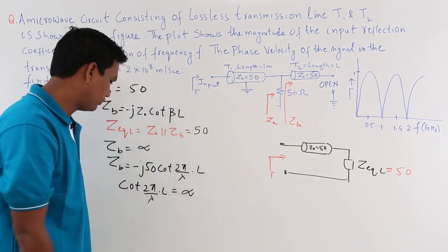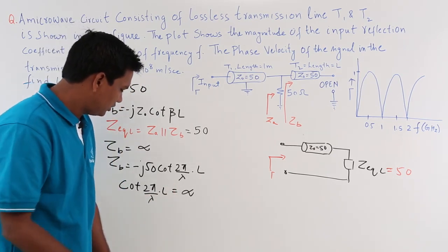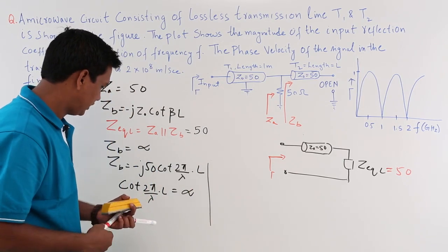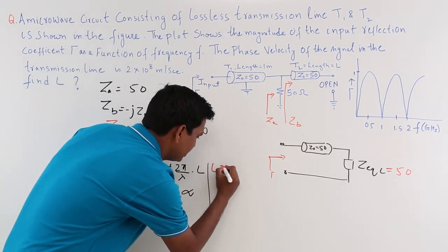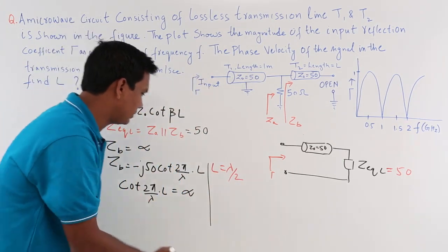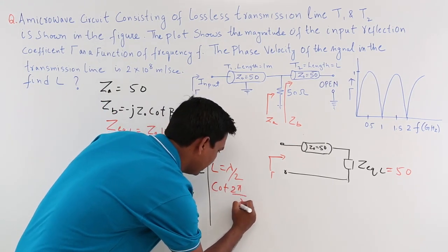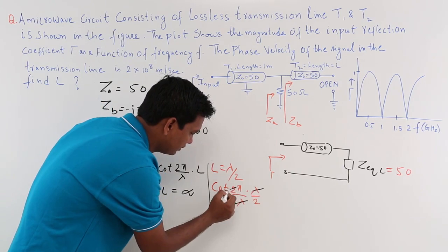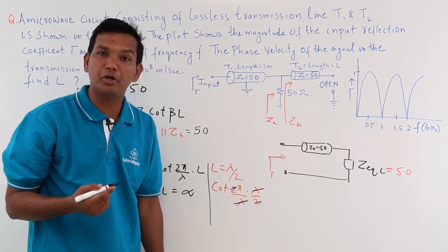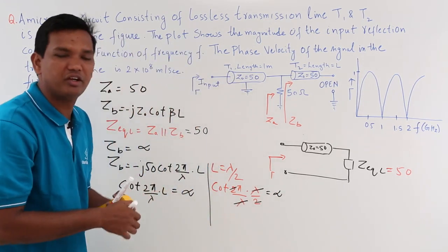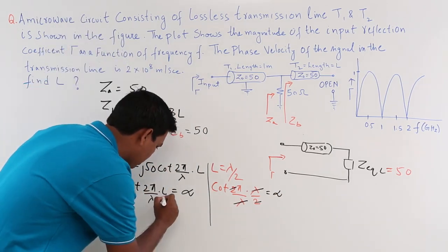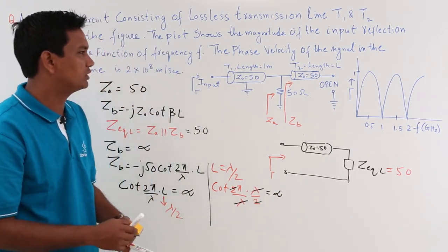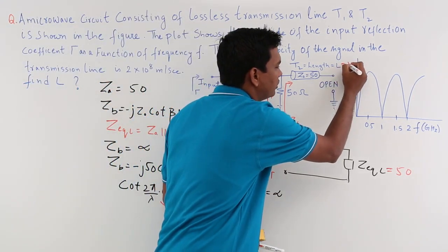We need cot(2π/λ · L) to equal infinity. If L = λ/2, then cot(2π/λ · λ/2) = cot(π) = infinity. So we conclude that the length L should equal λ/2.